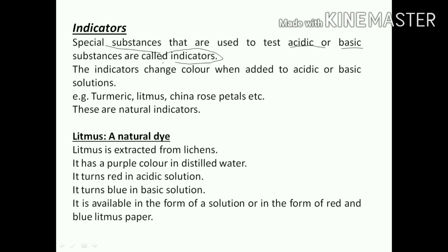These indicators - what they will do - they used to change their color. The function of this indicator is they change their color when they are added to acidic or basic solutions. Examples of indicators are turmeric - that one you know as 'holodi' - litmus paper or litmus solution, and China rose petals - China rose is what you call 'mandara' flower in Odia. So these are all natural indicators.